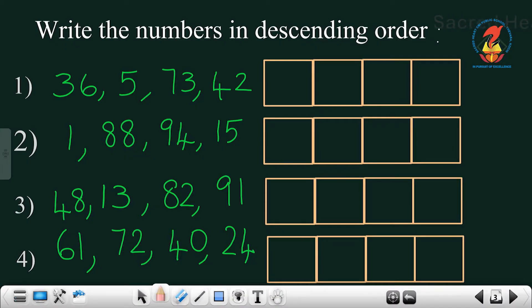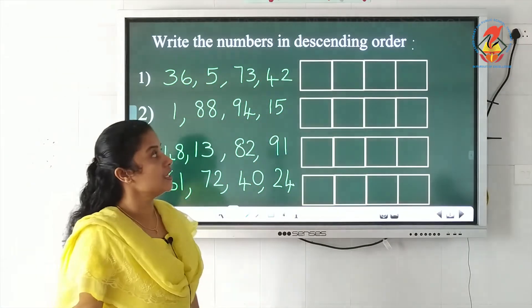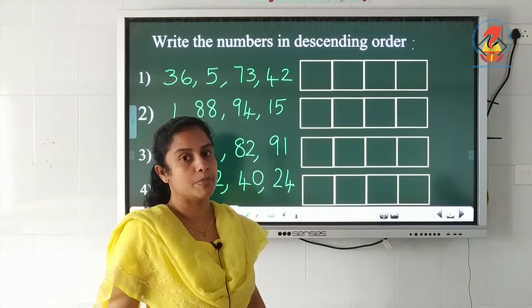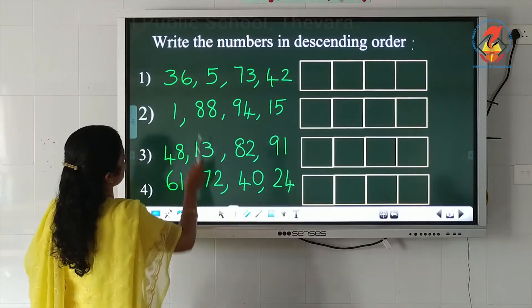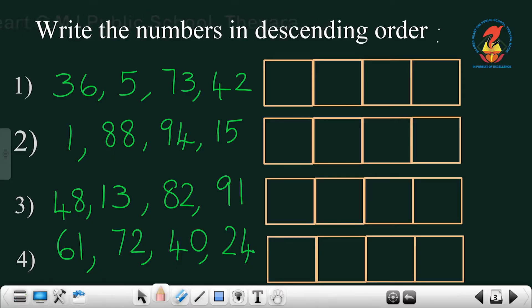Question number one: there are four numbers given — 36, 5, 73, 42. You have to arrange these numbers in descending order, that is biggest to the smallest. Which is the biggest number? The biggest number is 73, so we write 73 in the first box and strike off that number.